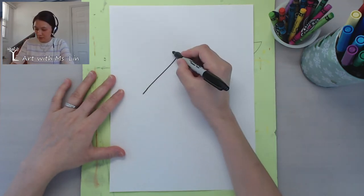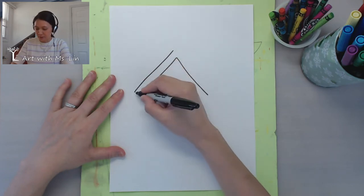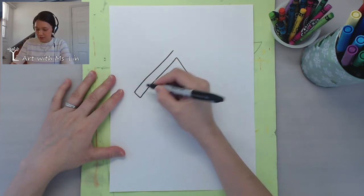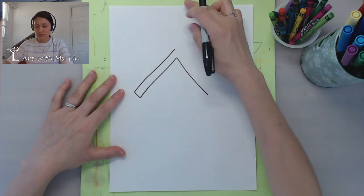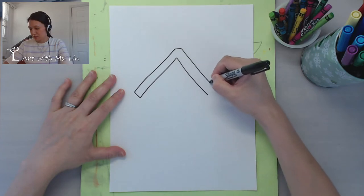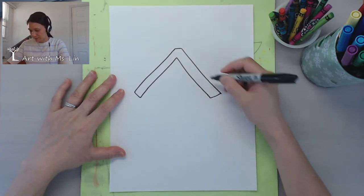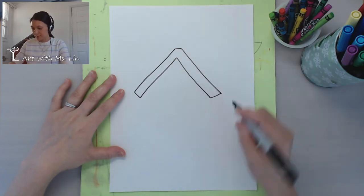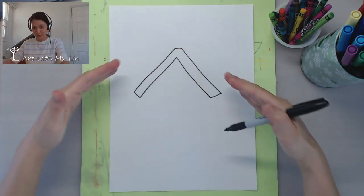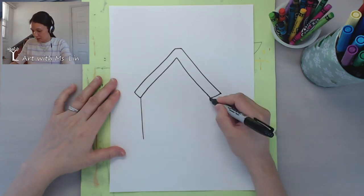Now the birdhouse, it could be standing on a pole or sometimes people hang it on the tree, right? So you can decide which way you want to make this. I'm going to draw the top kind of like that, upside down V, and then you make it thicker. And then in the middle it will be a square.